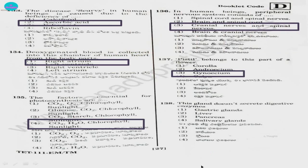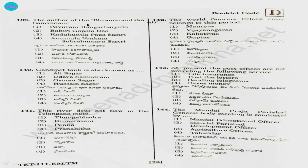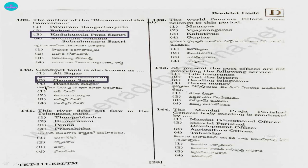Question 138. This gland does not secrete digestive enzymes: 1) gastric glands, 2) liver, 3) pancreas, 4) salivary glands. The answer is option 2, liver. Question 139. The author of the Varmarambika Samvadhan: 1) Pavuram Rangacharilu, 2) Bahirigopala Rao, 3) Kadukuntla Papashastri, 4) Anumola Venkata Subramanya Shastri. Answer is option 3, Kadukuntla Papashastri. Question 140. Kandipat Tank is also known as: 1) Ali Sagar, 2) Udaya Samudram, 3) Usman Sagar, 4) Usain Sagar. Answer is option 3, Usman Sagar.